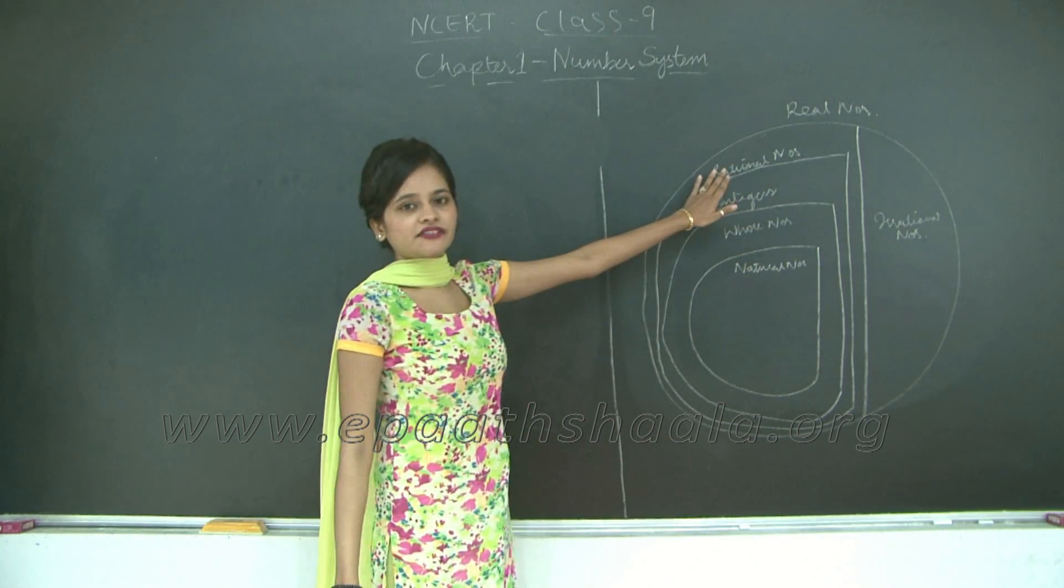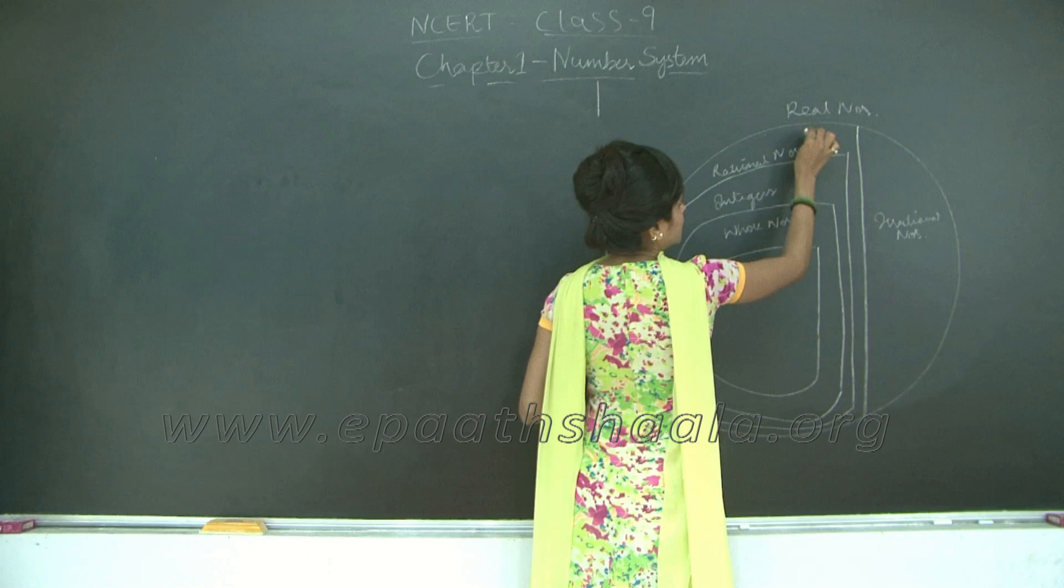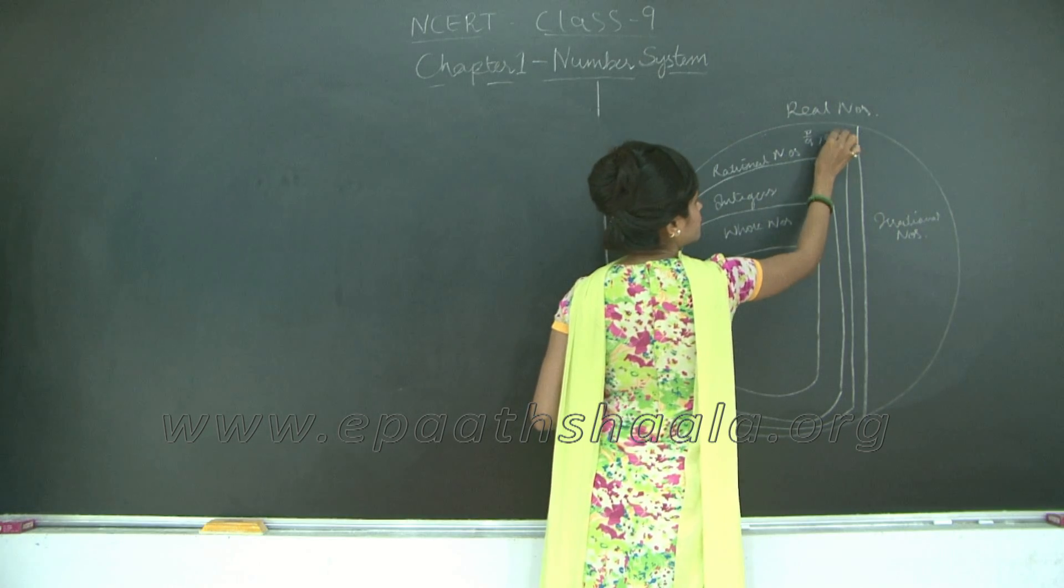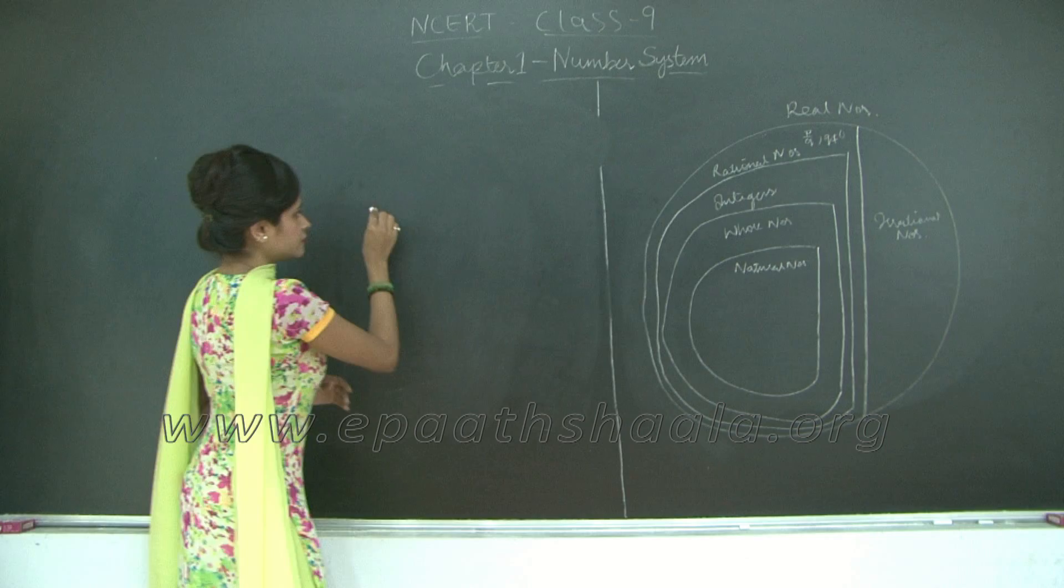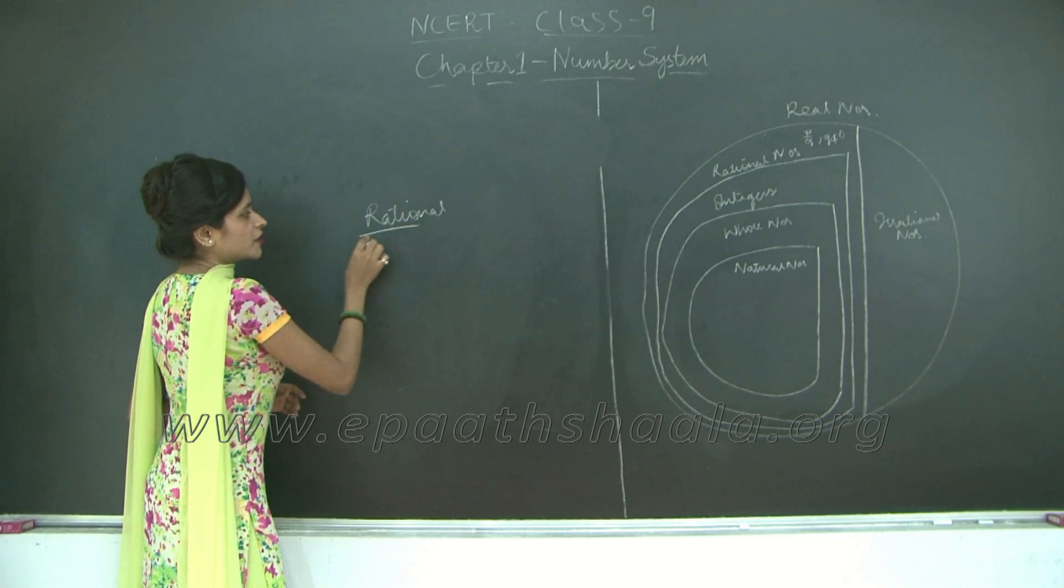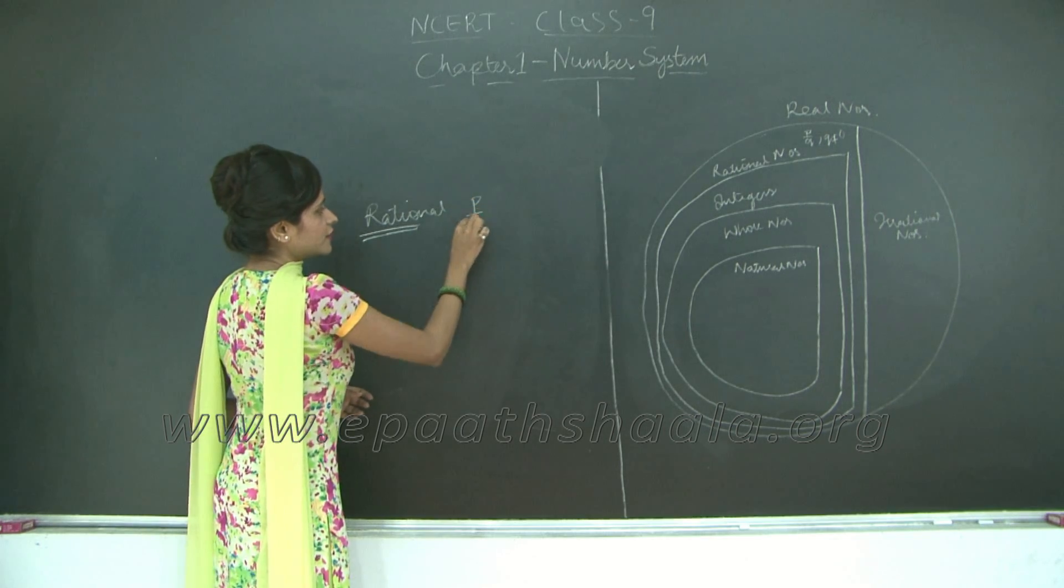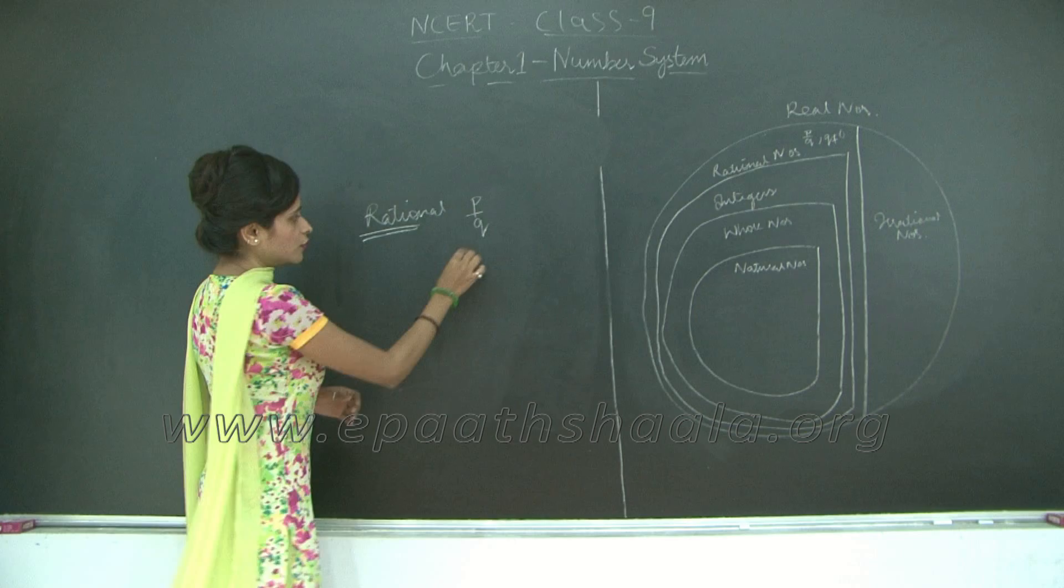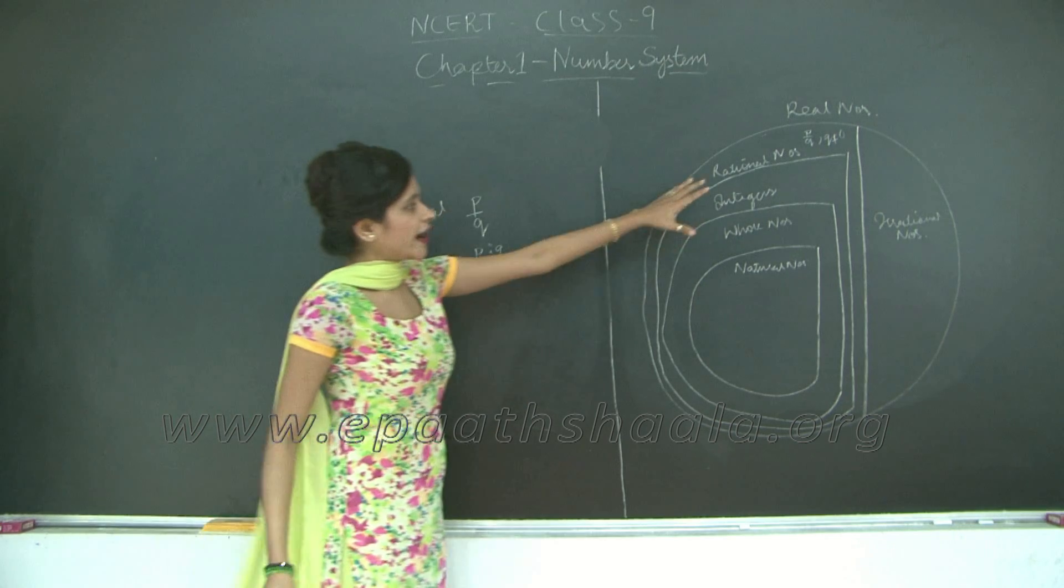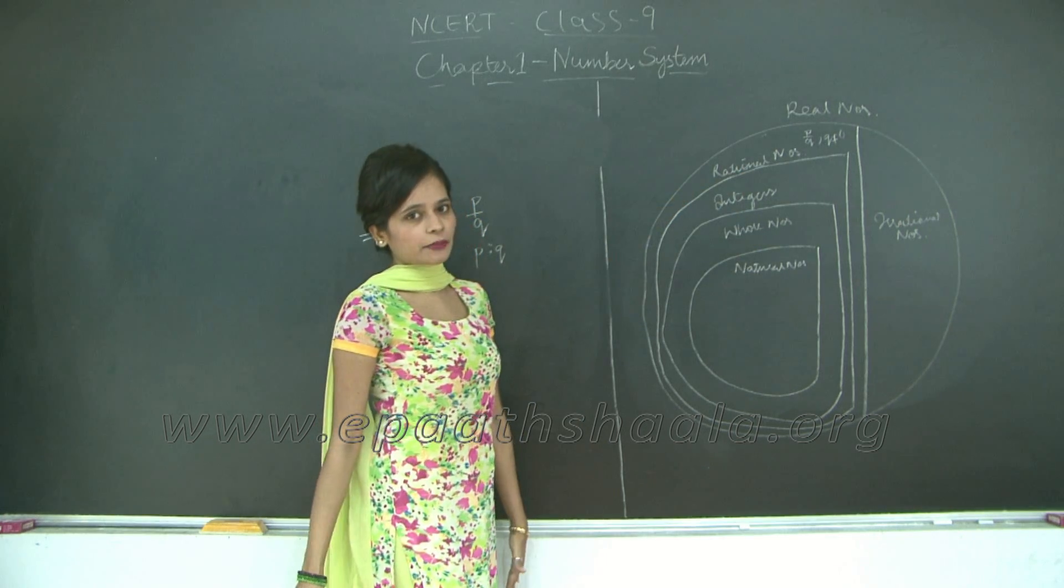So let us first define our rational numbers. Rational numbers are nothing but numbers that can be represented in the form p upon q where q is not equal to zero. And the word rational is derived from the term ratio. So ratio here, that is why we have written p upon q which is a ratio p is to q. Now we will see why all these numbers—integers, whole numbers, natural numbers—belong to the rational numbers category.